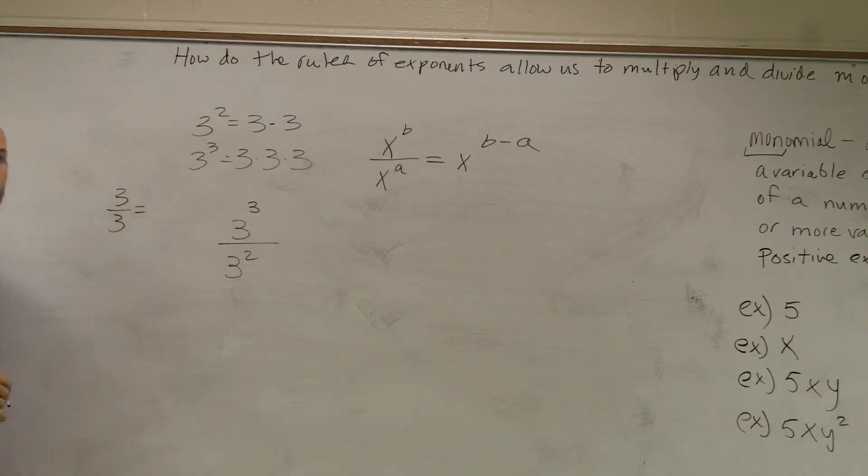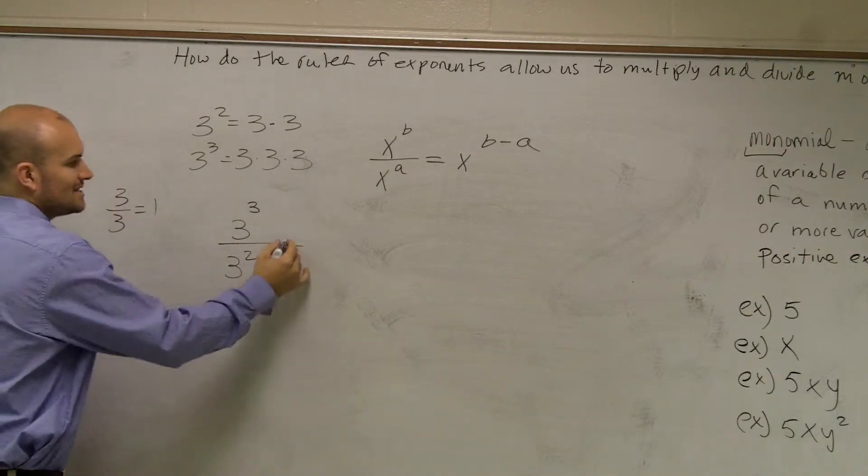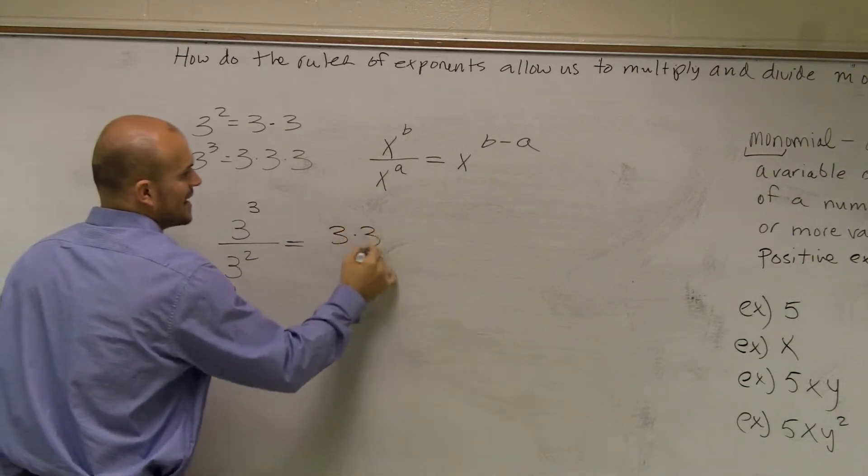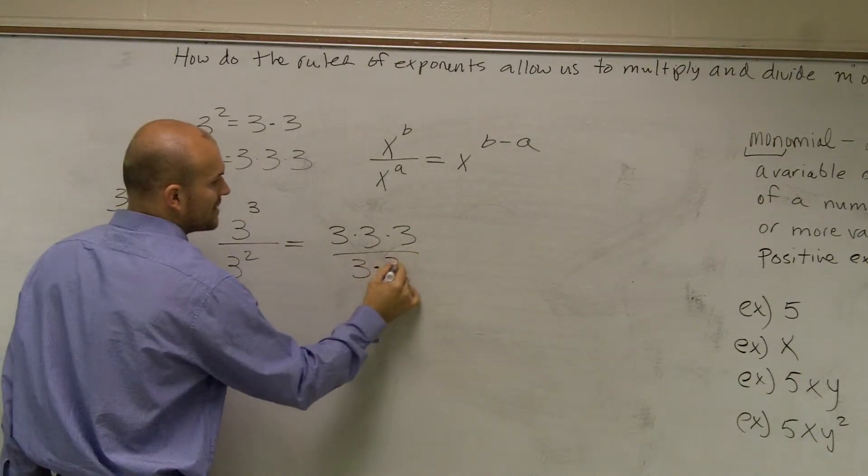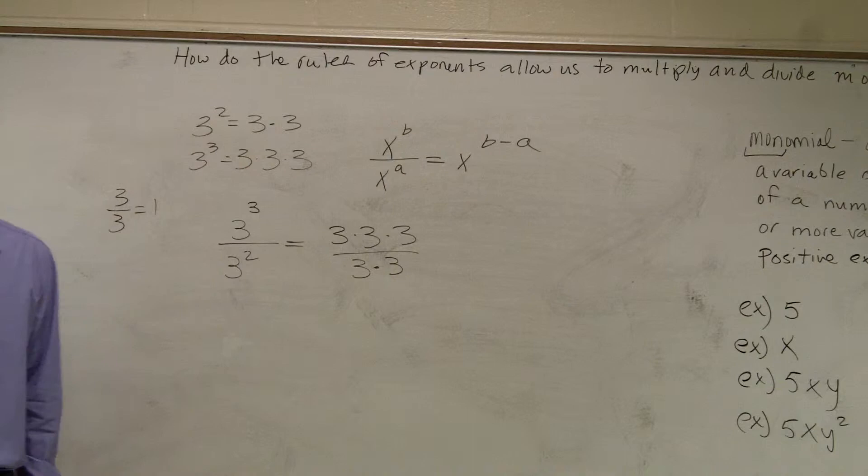3 divided by 3 equals what? 1, right? OK, good. So let's rewrite this out as 3 times 3 times 3 over 3 squared is 3 times 3. Does everybody follow me?